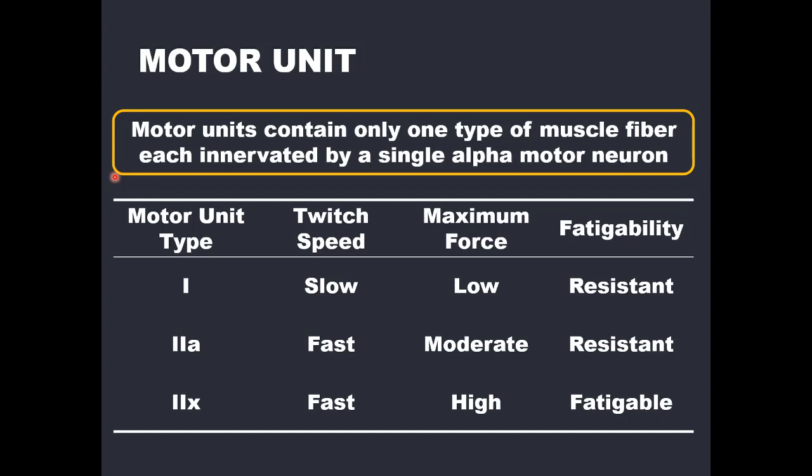All right, so let's go ahead and switch gears a little bit. We finished discussing the process of how muscle contracts, which is again underpinned by the EC coupling mechanism. Let's now turn our focus onto some discussion on motor units and how motor units are involved in the ability for muscles to produce different levels of force depending on the demand or needs.